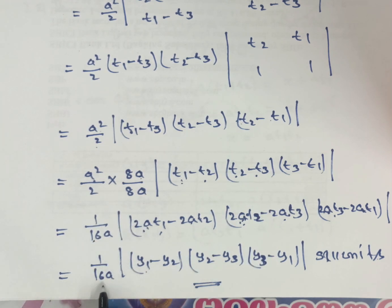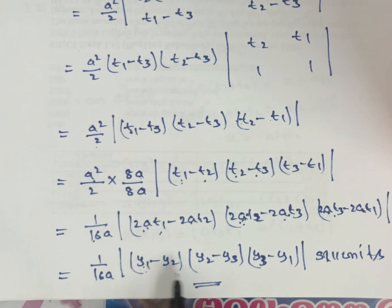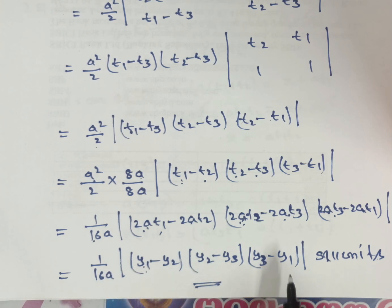So, the area of triangle = (1/16a) × modulus of (y1 − y2)(y2 − y3)(y3 − y1) square units. Okay, clear?